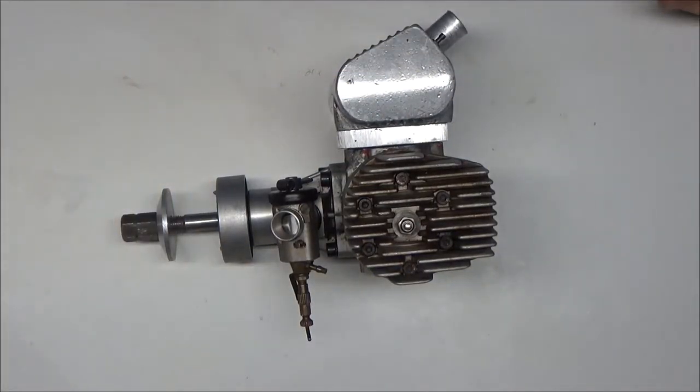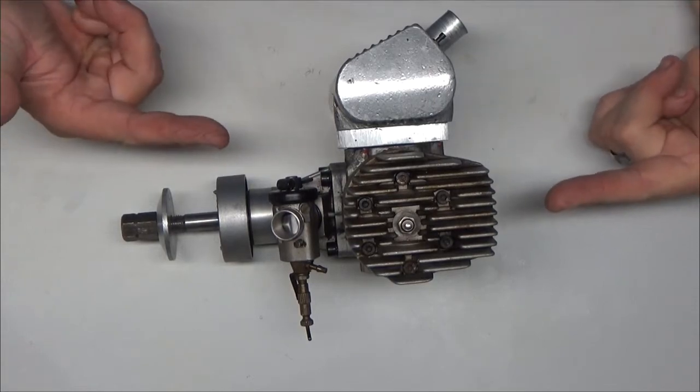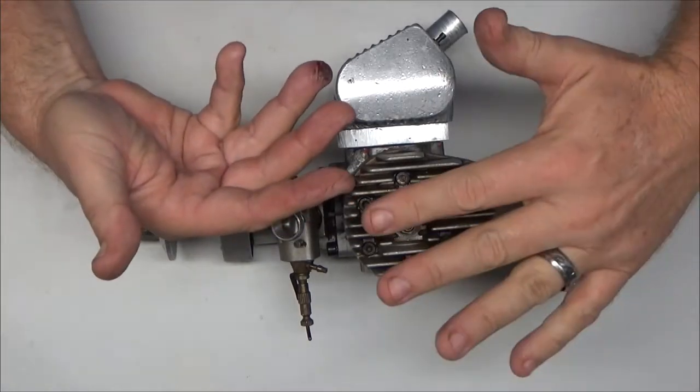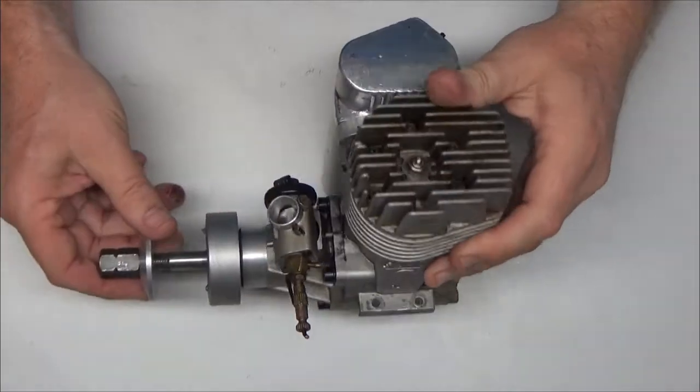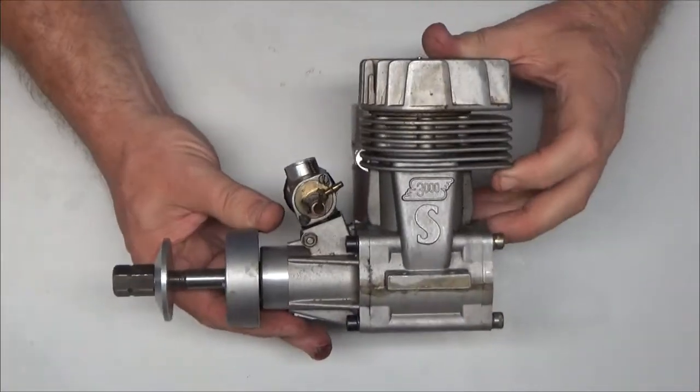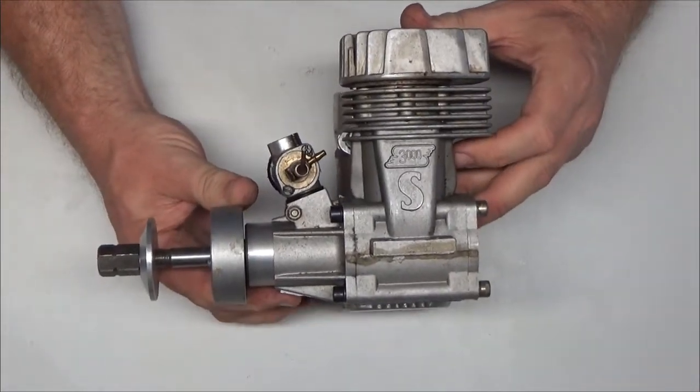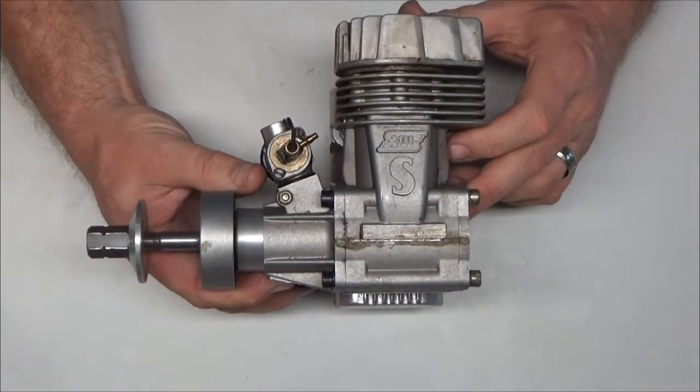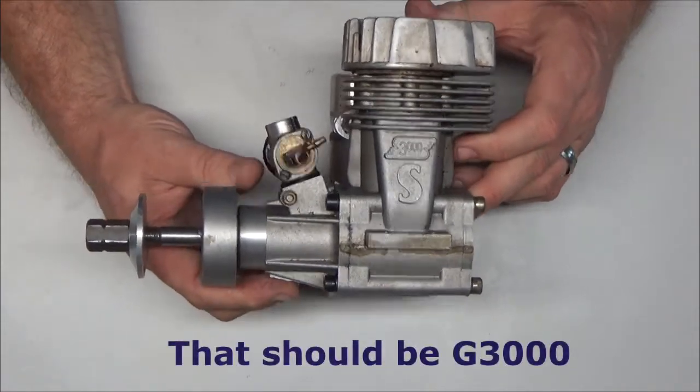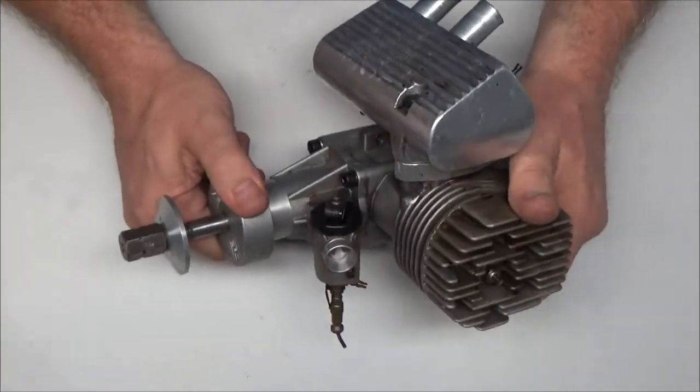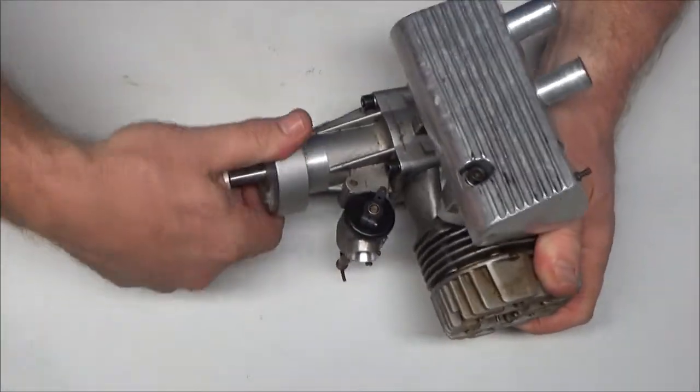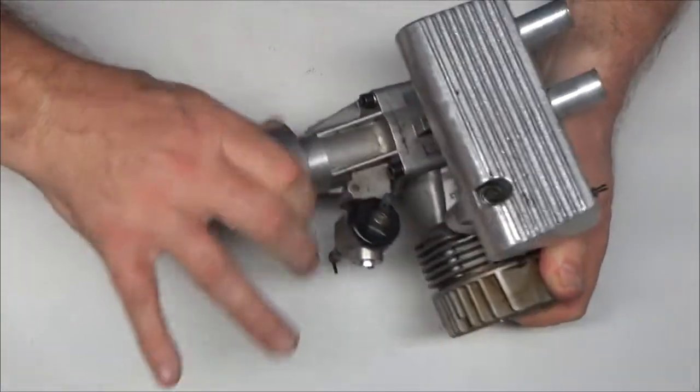Good afternoon YouTube viewers and subscribers, take a look at this monstrosity. Look at the size of this thing. This is something I picked up from a local modeler today: Super Tiger S3000, 1.8 cubic inch two-stroke engine, by far the largest two-stroke engine I've ever owned.